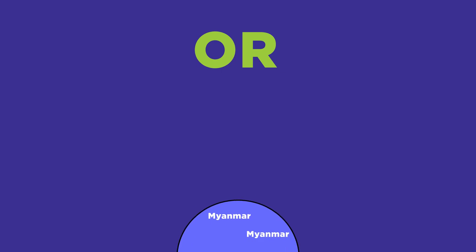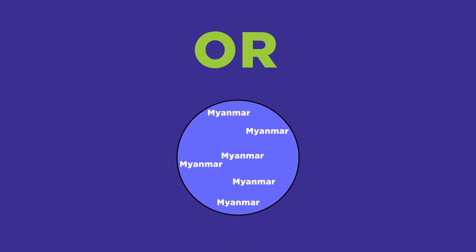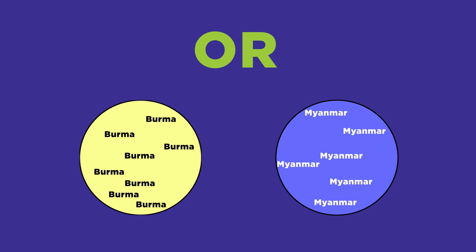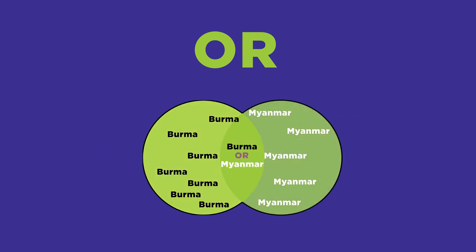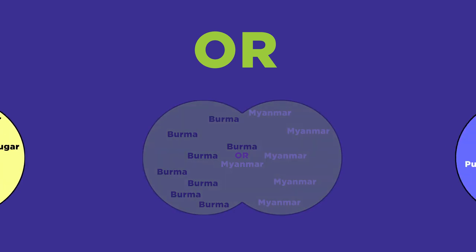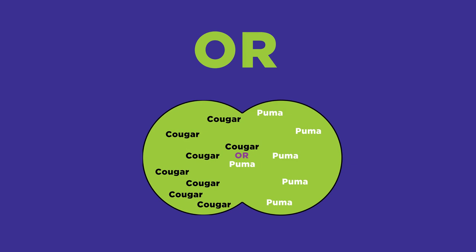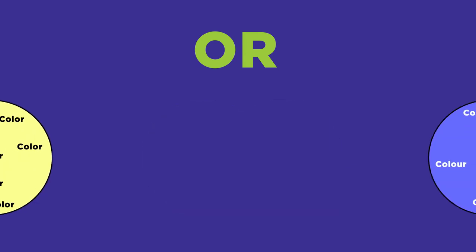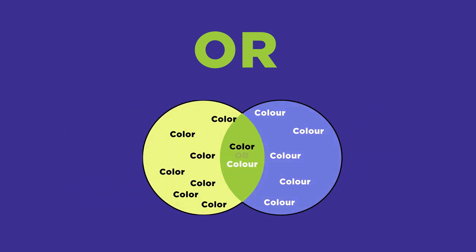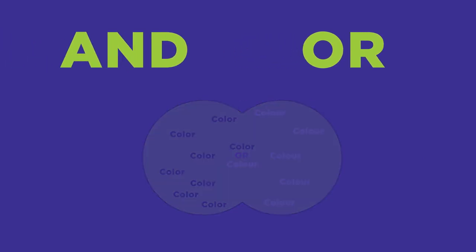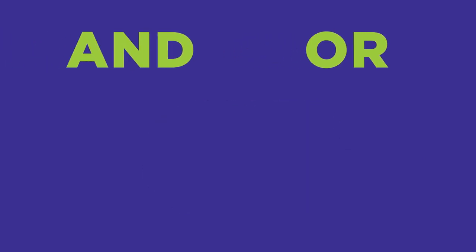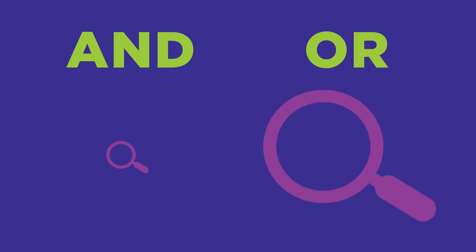Here are three examples of when to use OR. Maybe your topic has a new name — for example, the country Myanmar was formerly called Burma, so search for both words to get the most results. Maybe your topic is known by two different names — in some areas, a cougar is called a puma. Maybe your topic has two different spellings — in Great Britain, the word "color" is spelled with a U in it. So the operators AND and OR are basically opposites: AND narrows a search while OR broadens it.